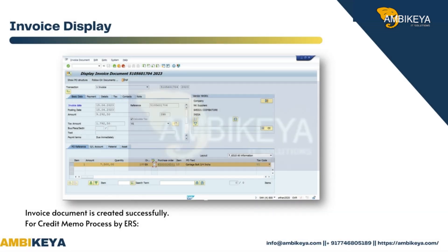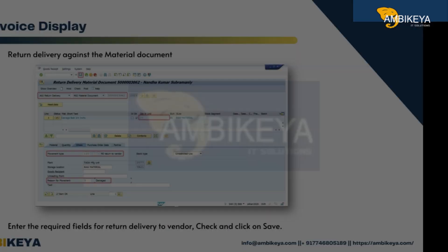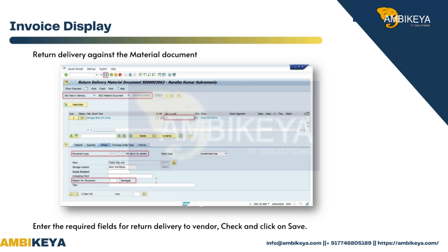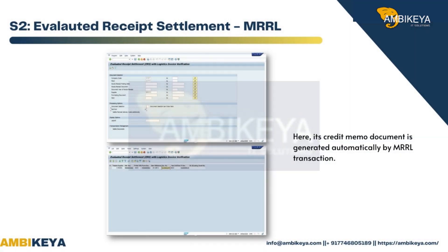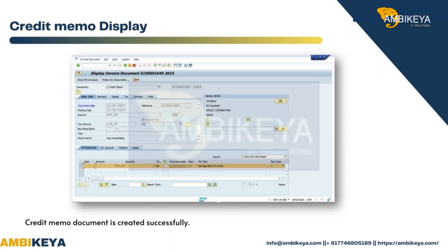Invoice Display — the invoice document is created successfully. For the Credit Memo process by ERS, perform a Return Delivery against the Material Document. Enter the required fields for Return Delivery to Vendor, check, and click Save. Then run the Evaluated Receipt Settlement via MRRL — the credit memo document is generated automatically. Credit Memo Display confirms the credit memo document is created successfully.